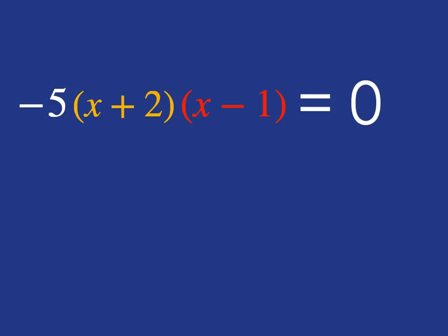And the only way you can get an answer of zero is if that is zero. So you've got minus five times zero times x minus one. Or if that is zero, where you've got minus five times x plus two times zero, which gives you zero. Or if both of them are zero, minus five times zero times zero is zero.